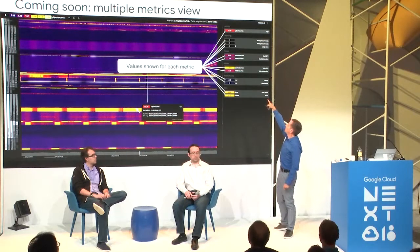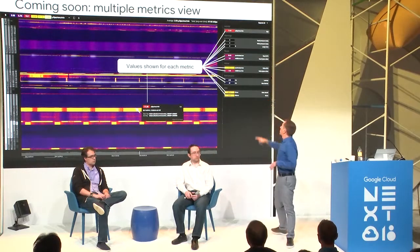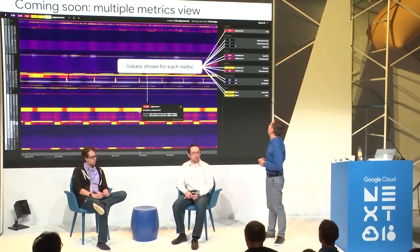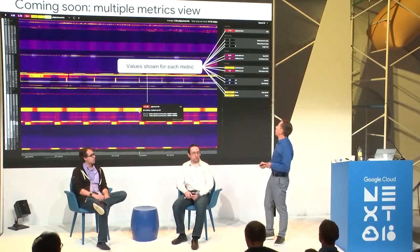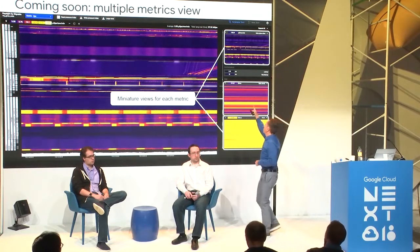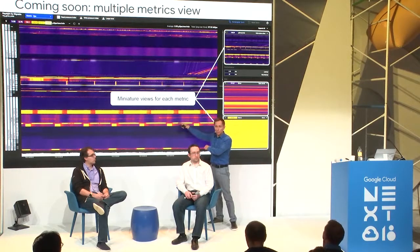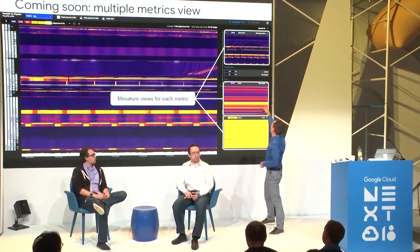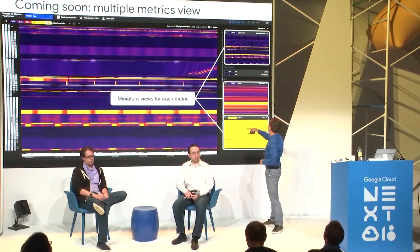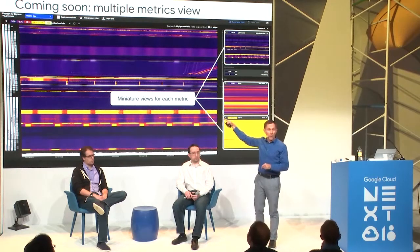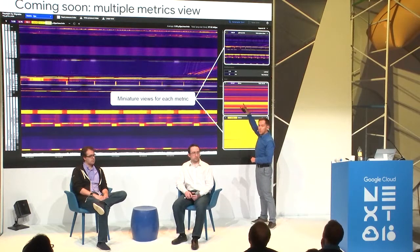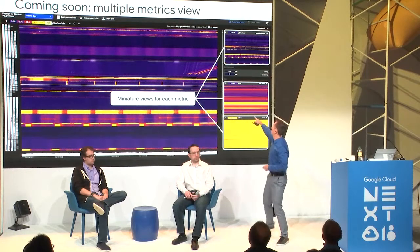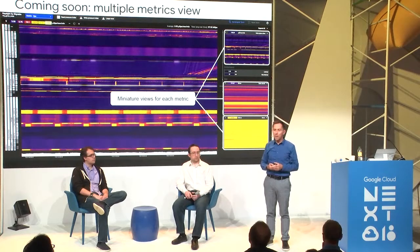In this example, reads shown in purple are somewhat lukewarm while writes are bright yellow — so not much reading but a lot of writing. There's also an expand-all button: clicking it brings up miniature views for each metric showing the same window as the main view — ops, bytes written, data stored, number of rows. When you hover in the main view, the cursor moves simultaneously across all mini views showing corresponding metrics. Zooming and panning in the main view synchronizes all sub-views as well.